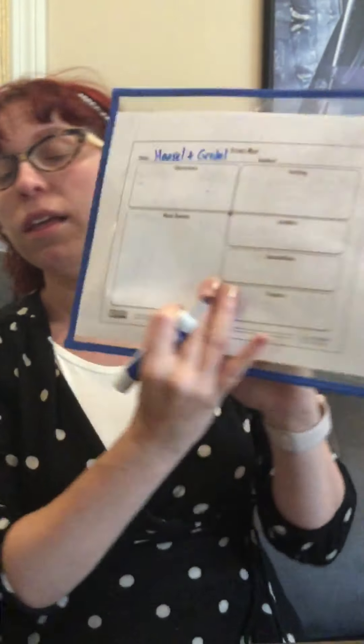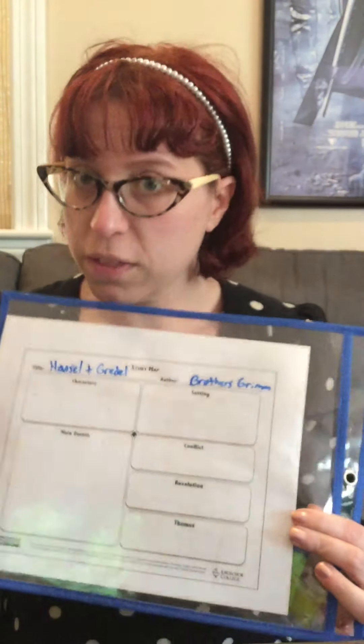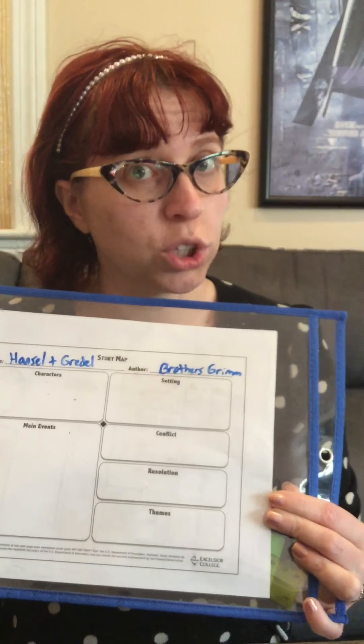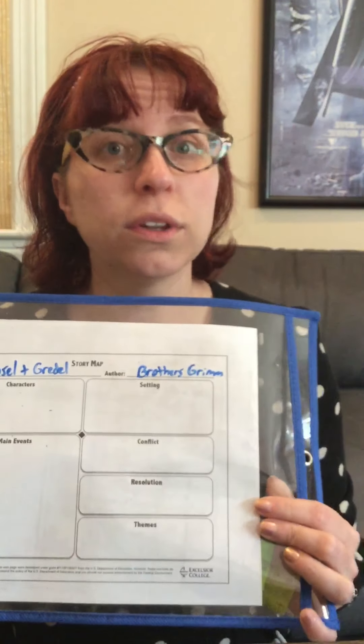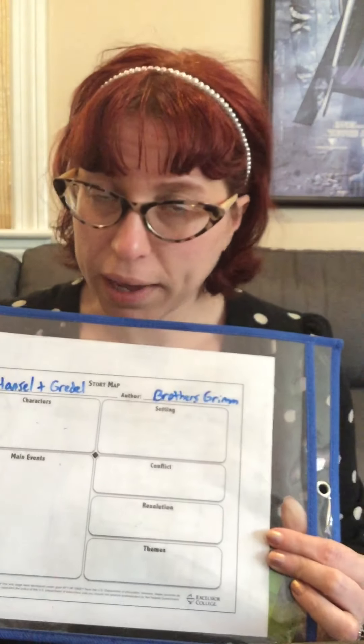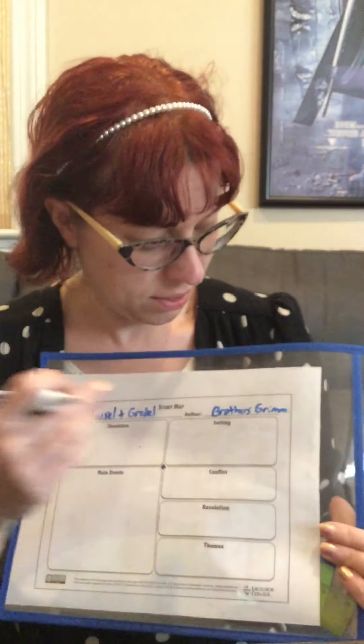So the title of the story is Hansel — I'm gonna put plus — Gretel. The author was the Brothers Grimm. It's always very important to know the title because sometimes it gives you some very important information. Like the story we're reading now is the Call of the Wild, and we know it's about someone going back into the wild. Hansel and Gretel is the name of the story, so we know the story is about Hansel and Gretel. And Brothers Grimm — it's always nice to know the author because they're the ones who wrote the story and they should get credit for what they do.